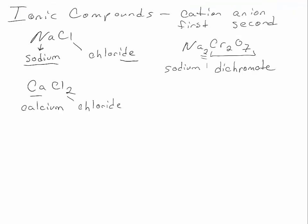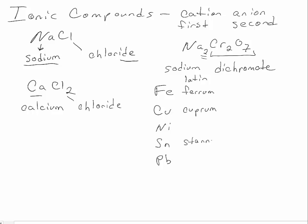Another consideration with ionic compounds is when you have metals that have multiple charges. The metals you need to know for this class are iron, copper, nickel, tin, and lead. Now these have old names or Latin names, and the Latin names are ferrum, cuprum, stanum, and plumbum. Nickel doesn't have a Latin name so we're not going to worry about that one.